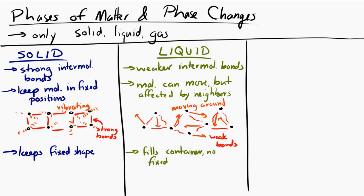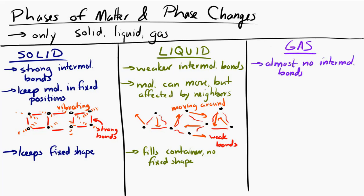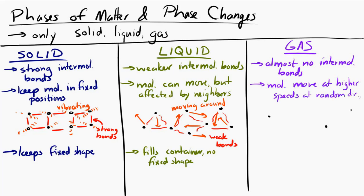For a gas, the intermolecular bonds are almost negligible — very weak compared to the other two phases. The molecules within the substance are usually moving around at pretty high speeds in random directions, and the molecules are relatively far apart. From a macroscopic perspective, a gas will fill whatever container it is in.